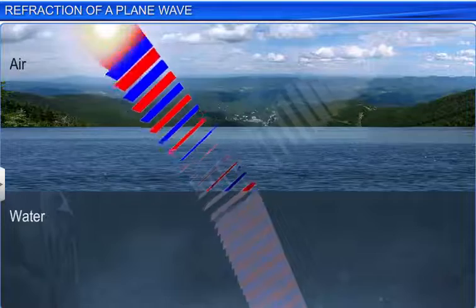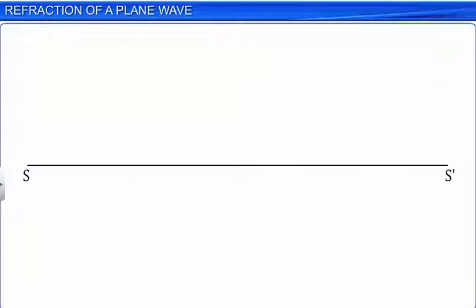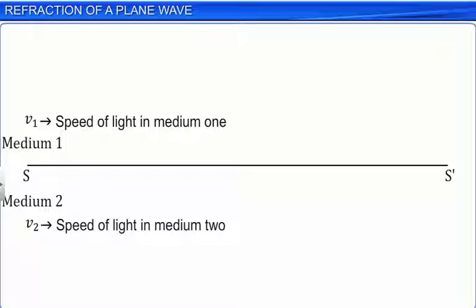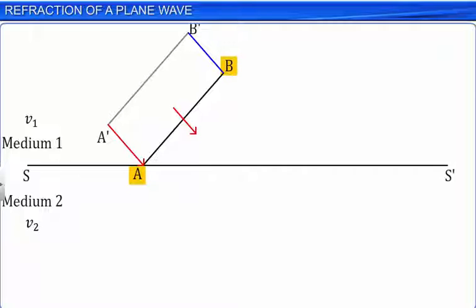Let us first consider the refraction of light when it propagates from a rarer medium to a denser medium. Let SS' be the boundary of the two transparent media, medium 1 and medium 2, in which the speeds of light are V1 and V2 respectively. Consider a plane wavefront AB in medium 1 propagating towards the interface SS'. A normal to the wavefront in the direction of its propagation gives the direction of the wave. Let I be the angle between the wavefront AB and the interface SS'; then the angle of incidence is also equal to I.